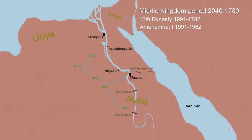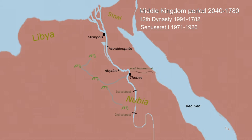Amenemhat I was killed, and his son Senusret I became king. When Senusret I heard about the coup in the palace, he rushed home from the war in the western desert against the Libyans and put down the coup, becoming the next pharaoh.